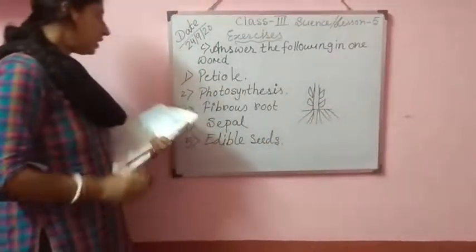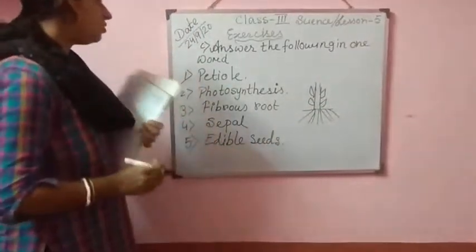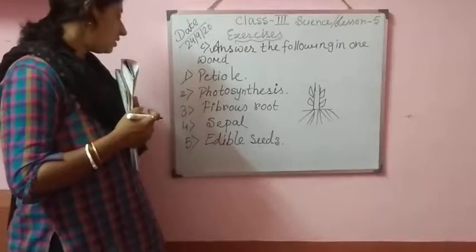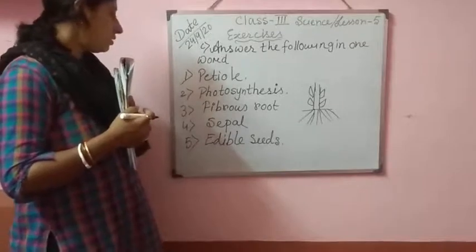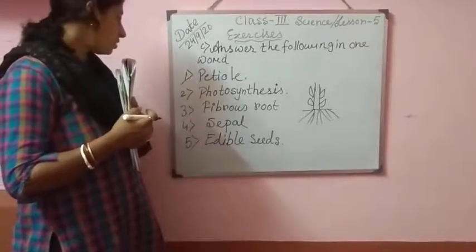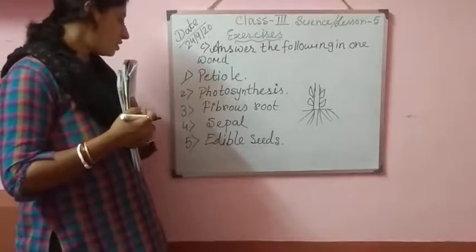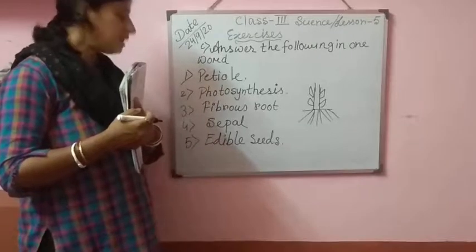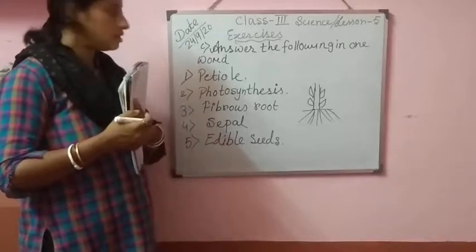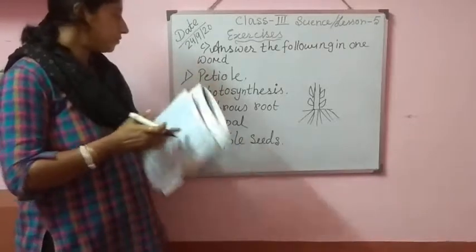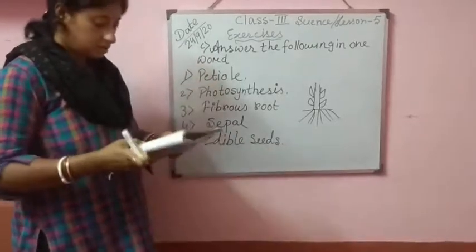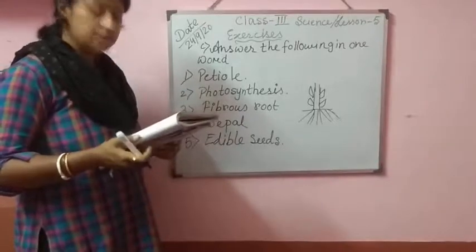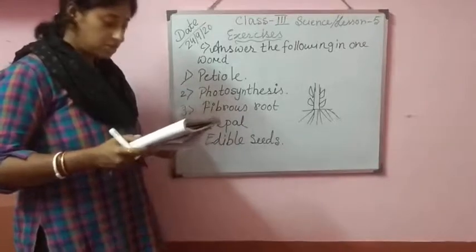Number 1: petiole. Number 2: photosynthesis. Number 3: fibrous root. Number 4: sepal. At last number 5: edible seeds. So students, everybody write in your copy with question.